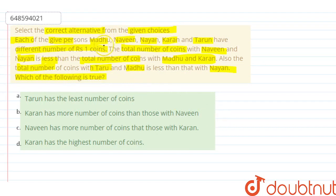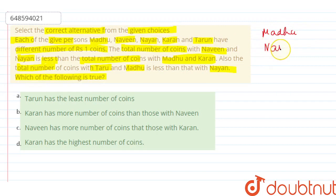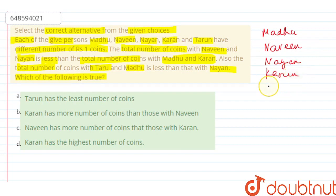So guys, to begin with, how many people are there? The first person is Madhu, then we have Naveen, then Nayan. इसके बाद Karan है, और एक और person है — Tarun. कुछ statements आपको यहाँ पर question में given हैं, इनको मैं trace कर लेता हूँ। तो देखिए, पहली बात आपको यहाँ पर क्या given है?